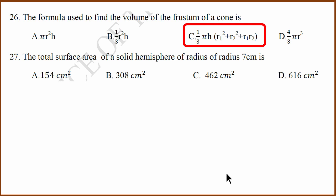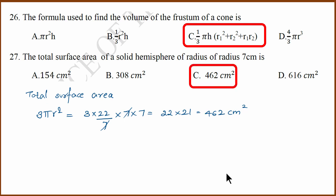27th question is again simple formula substitution question. What is the total surface area of solid hemisphere? It is 3 pi r square, and then substitute. You get 462 cm square.